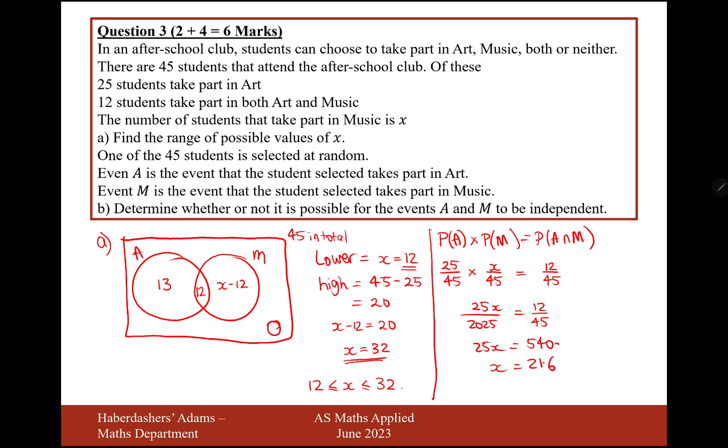Right, okay. So if we've got a decimal number here, that would indicate to me that it is not possible for A and M to be independent.